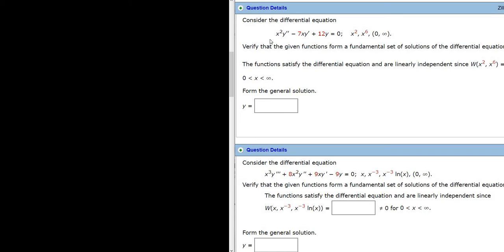Okay, let's work out this problem. It says, consider the differential equation, x squared y double prime minus 7xy prime plus 12y equals 0.